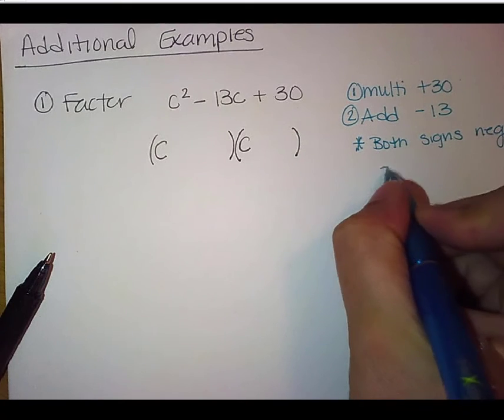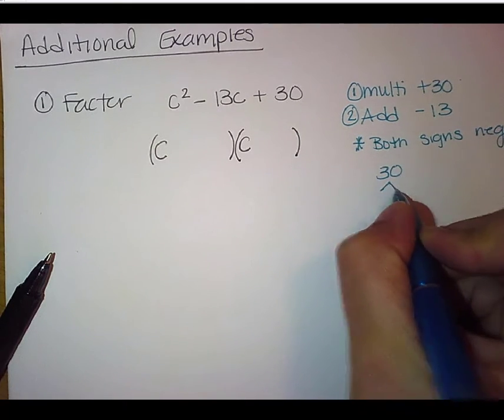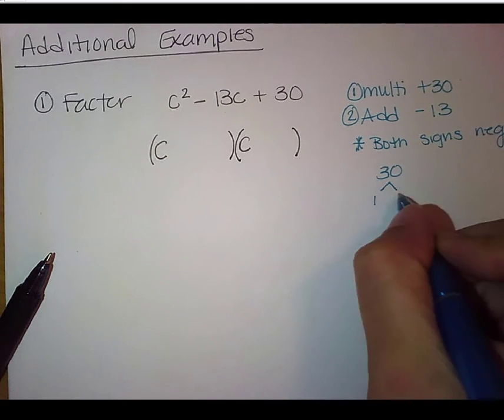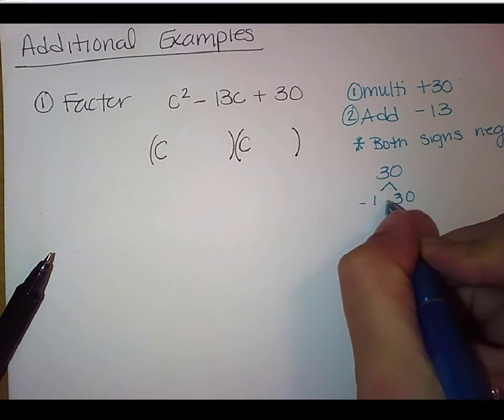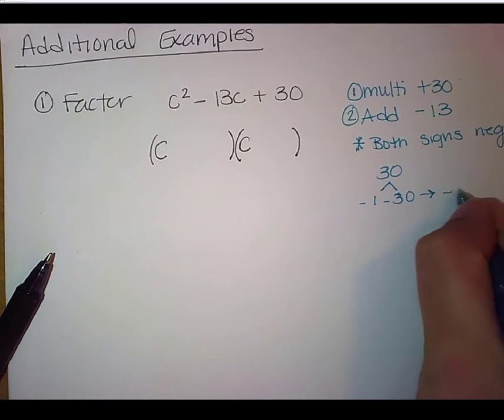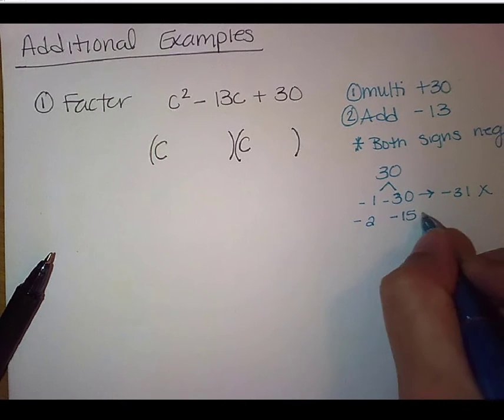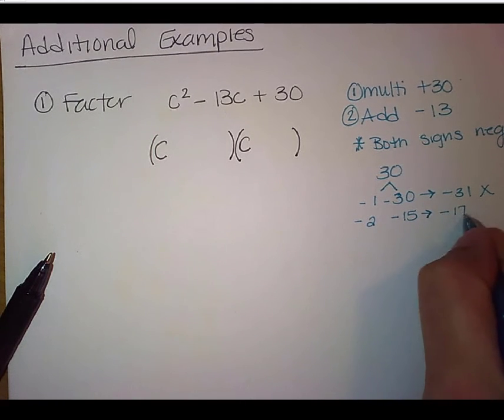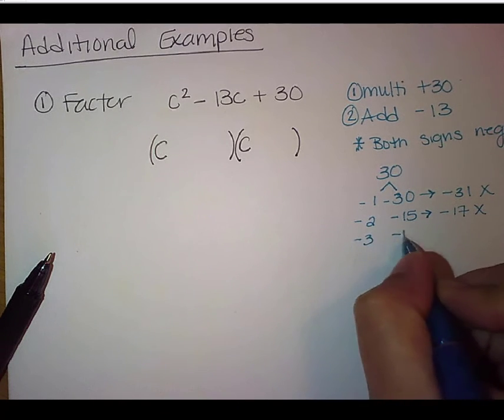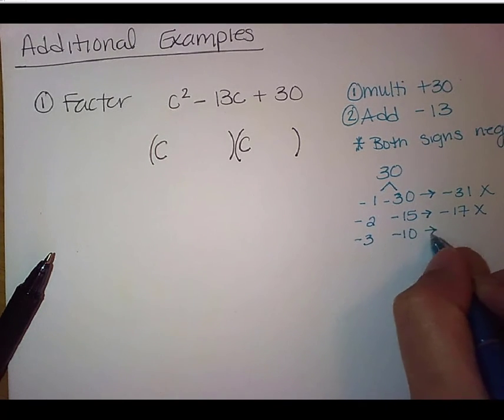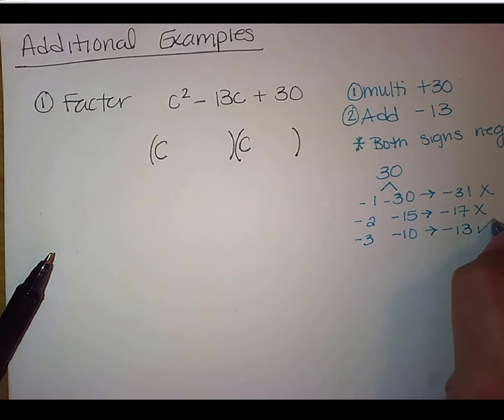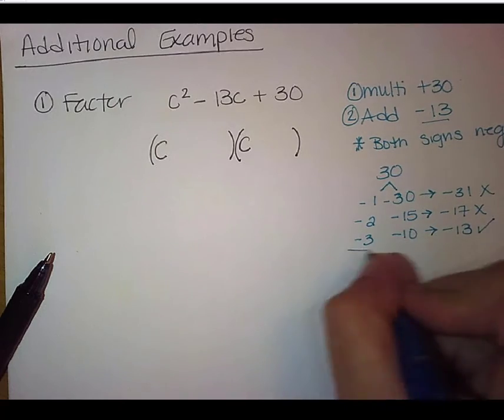Okay, so now we're looking at 30. And we can start off with 30 times 1. And remember, they're both going to be negative. But when we add that together, that's going to give us negative 31, so that's not going to work. We have negative 2 and negative 15. But we add that, we're going to get negative 17, which also doesn't work. And we've got negative 3 and negative 10. We add that, we get negative 13. That is what we were looking for for our center term. Remember, we wanted to add to negative 13. So there's our pair.